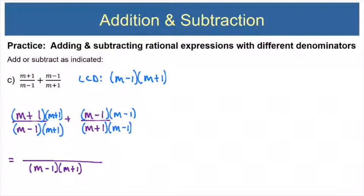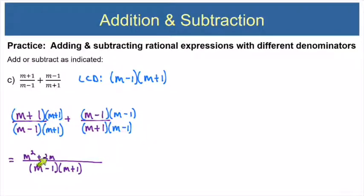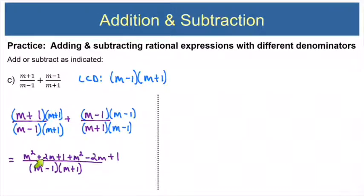Now we write one fraction with the common denominator m minus 1 times m plus 1, and we FOIL both numerators. For the first: first times first is m squared, outer plus inner gives 1m plus 1m equals 2m, and last times last is plus 1. So the first numerator is m squared plus 2m plus 1. For the second: first times first is m squared, outer plus inner gives minus 1m plus minus 1m equals minus 2m, and last times last is plus 1. So the second numerator is m squared minus 2m plus 1.